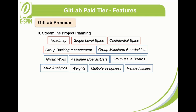Group backlog management simplifies tracking, scoping, and planning future work with group-level backlog management on multiple issue boards. Group milestone boards/lists visualize future work to be delivered in future releases/milestones. Group wikis keep your information at a higher level and accessible to a broader set of people — examples include team-specific information, coding style guides, and designs for your brand or company.